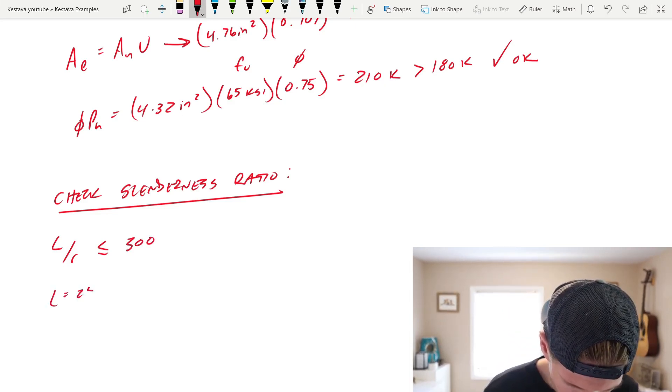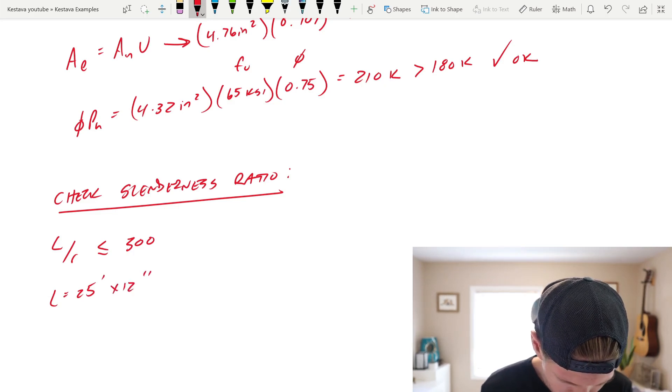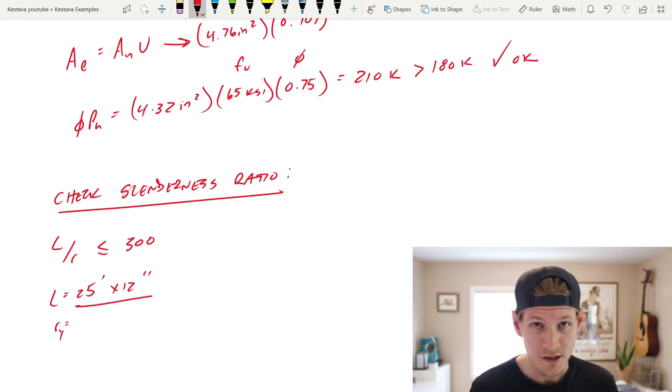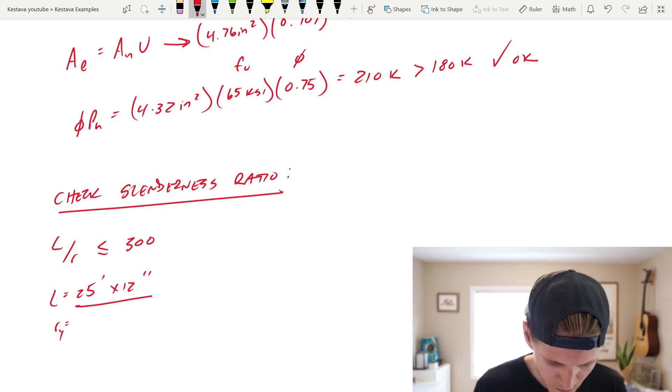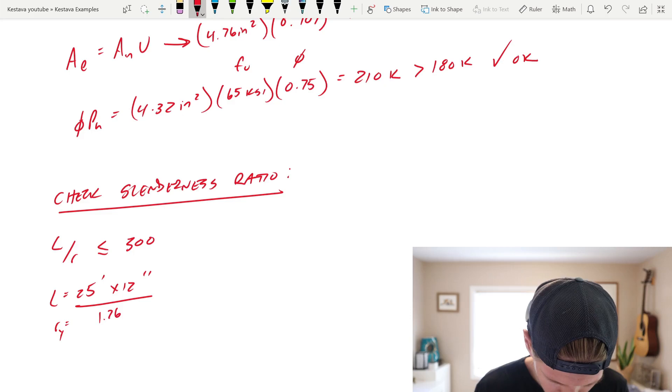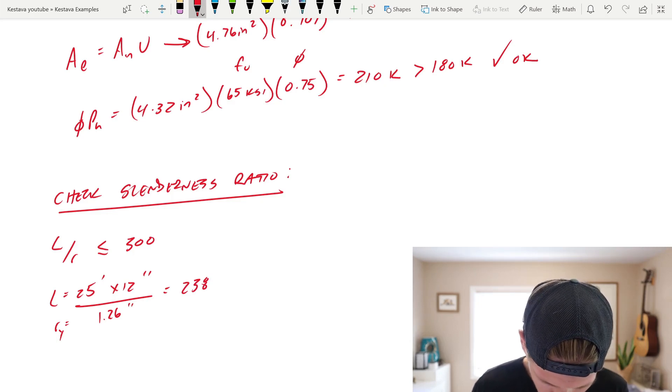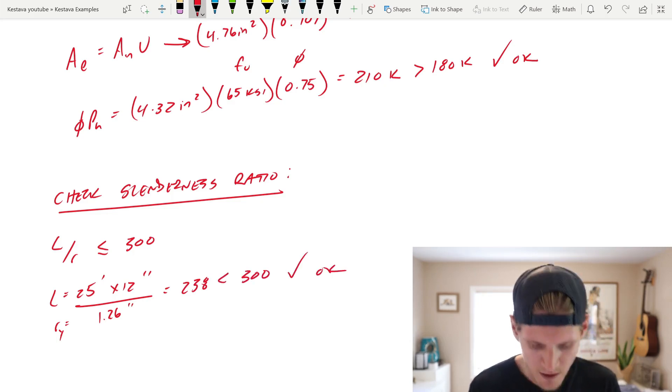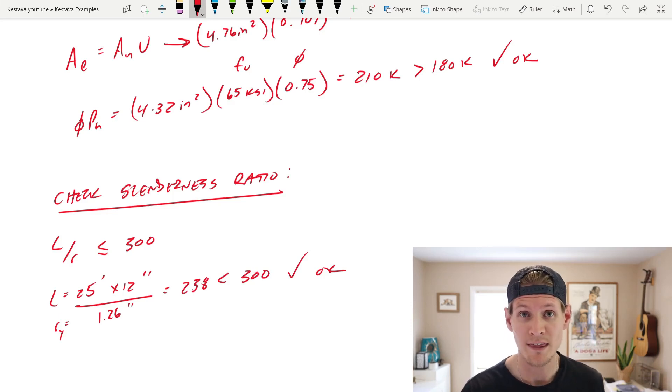Well, it's a 25 foot long member. Multiply that get it into inches and then over R and in this case we want R sub Y. R sub Y is in table 1-1 at the beginning again and that's for our W8 by 21 wide flange member. R sub Y is 1.26 inches and that gets you inches over inches which equals 238 so it's unitless which is less than 300 so we are okay in terms of slenderness for this design and the W8 by 21 that we chose for this connection so we are good to go.